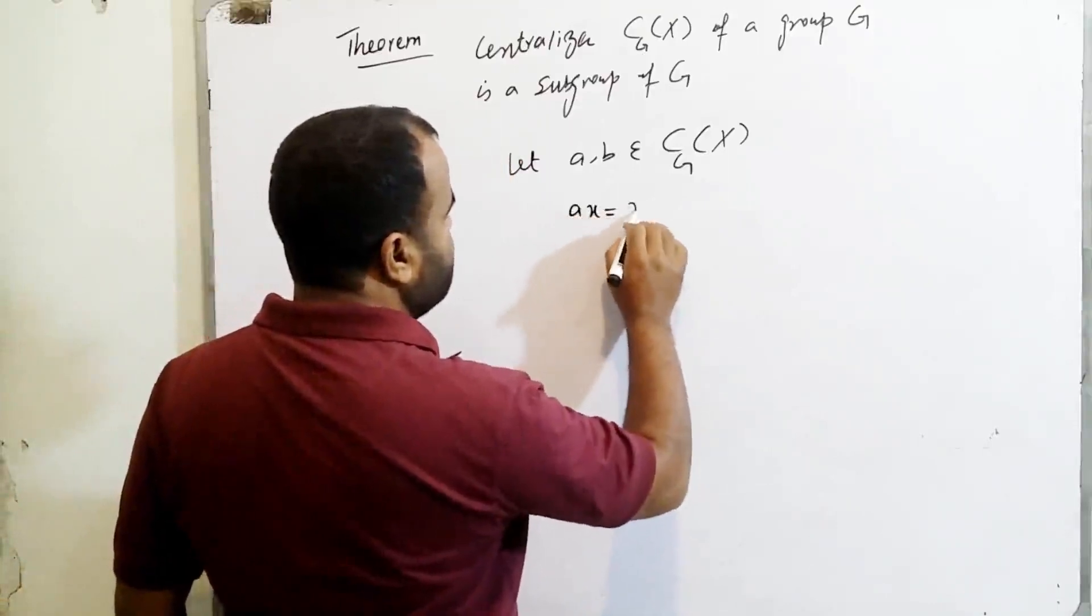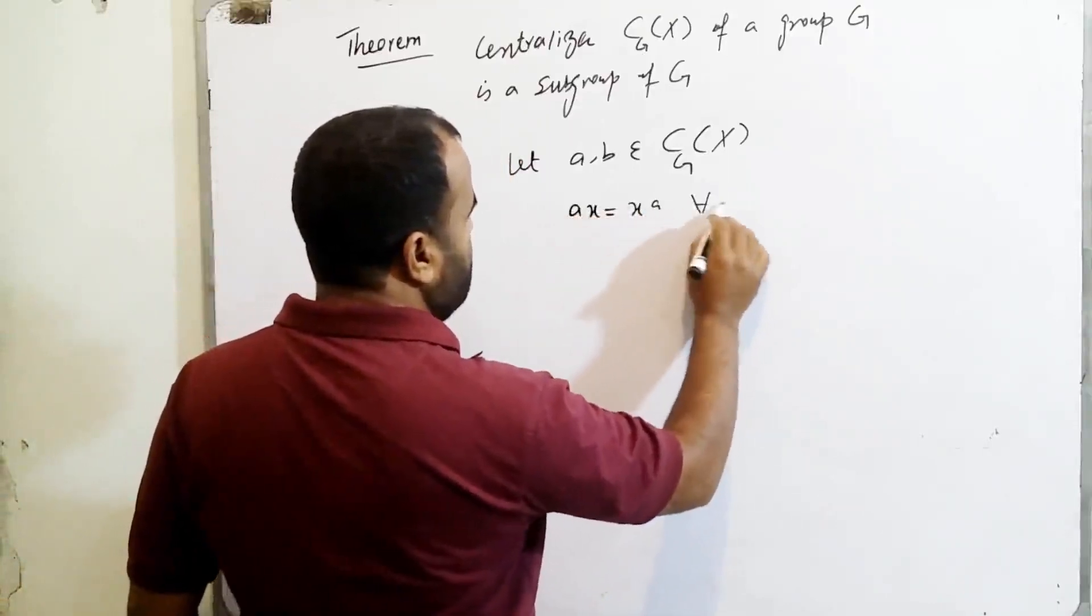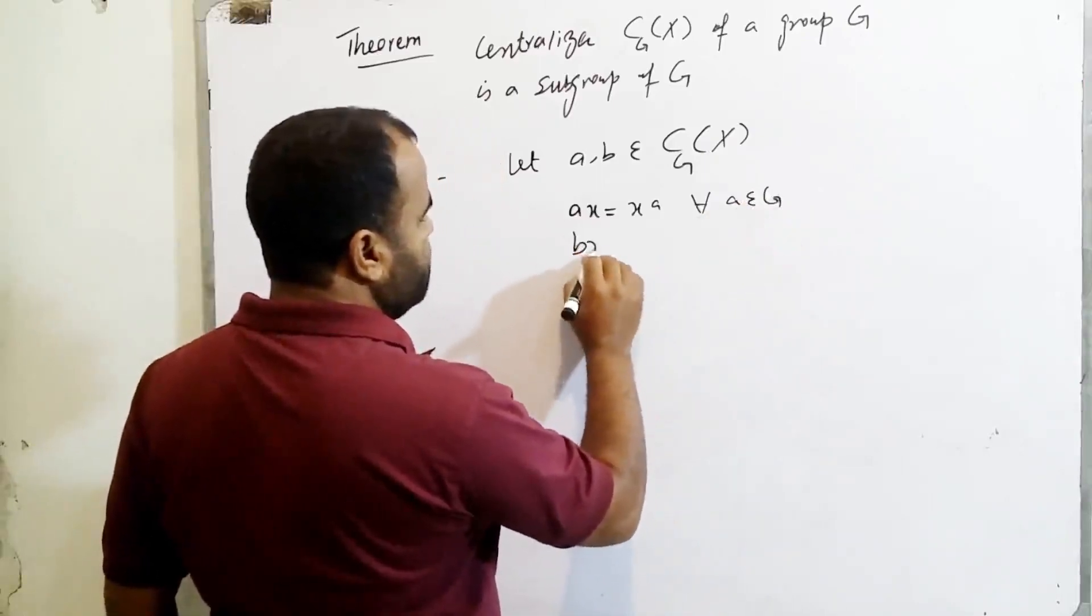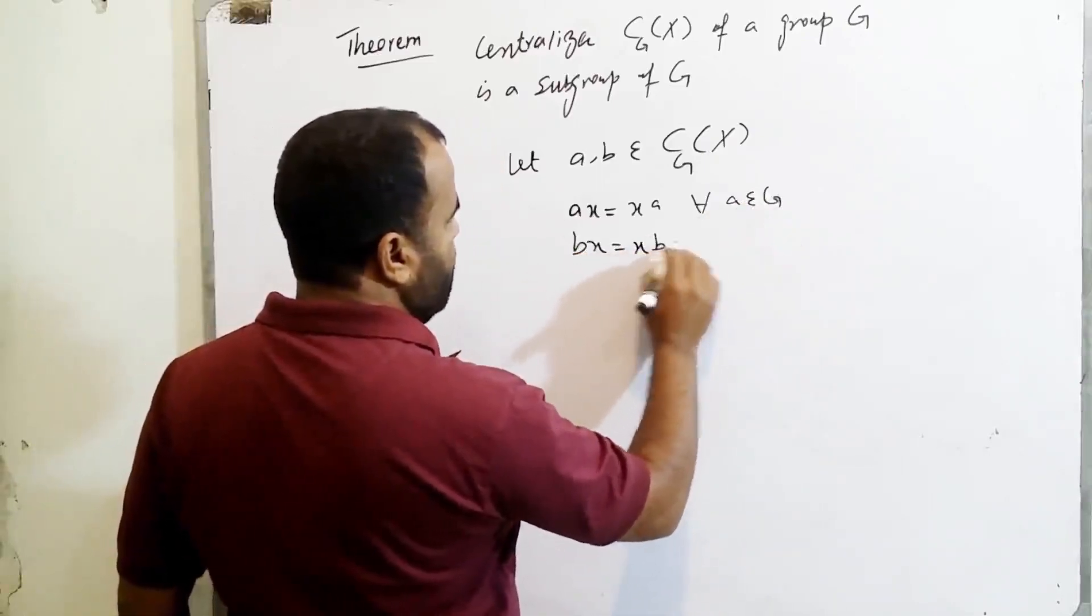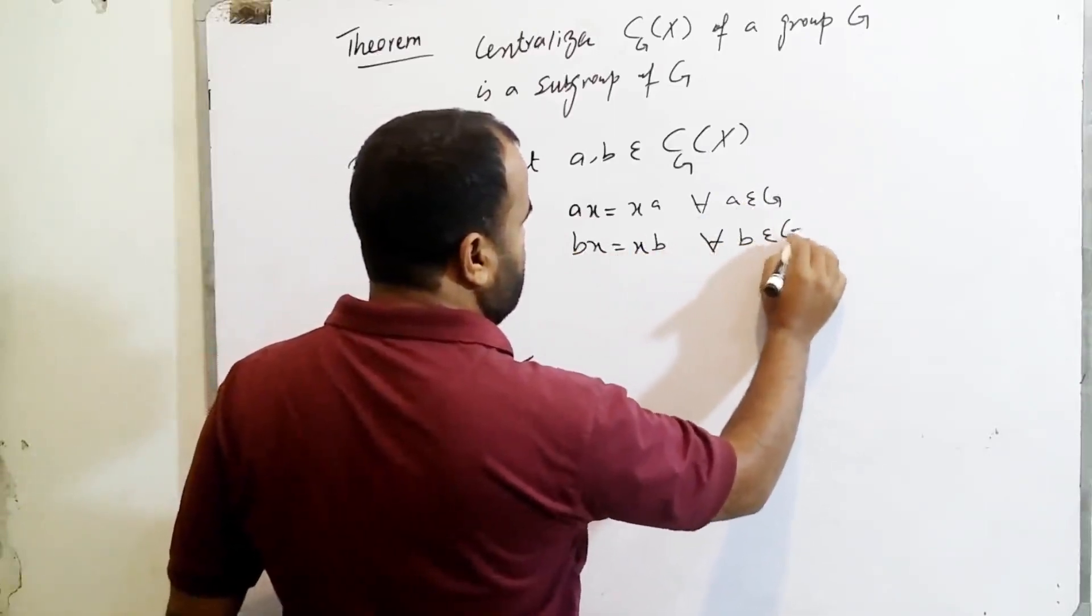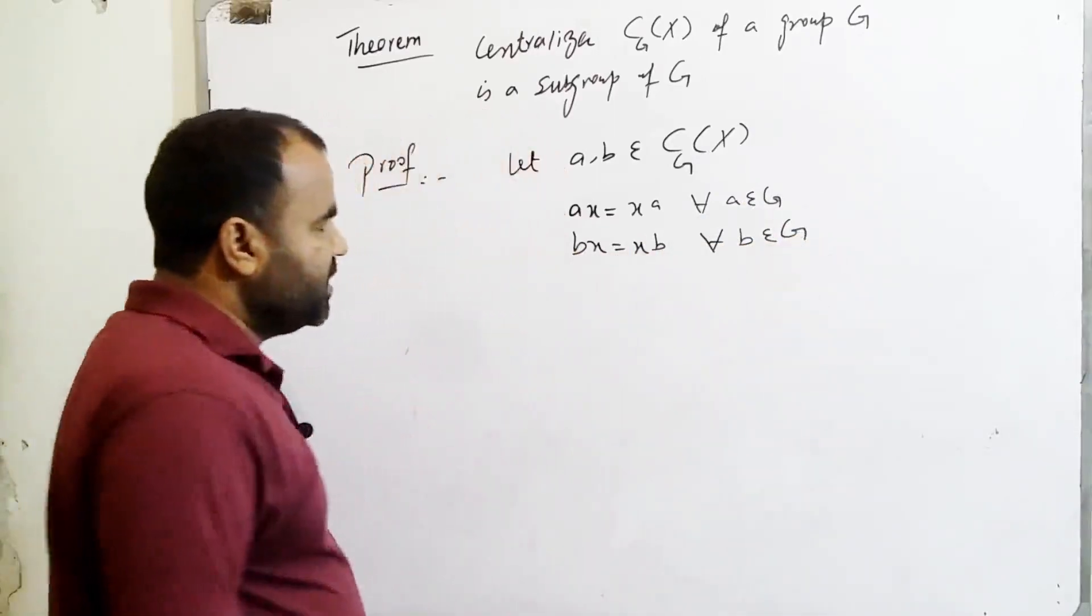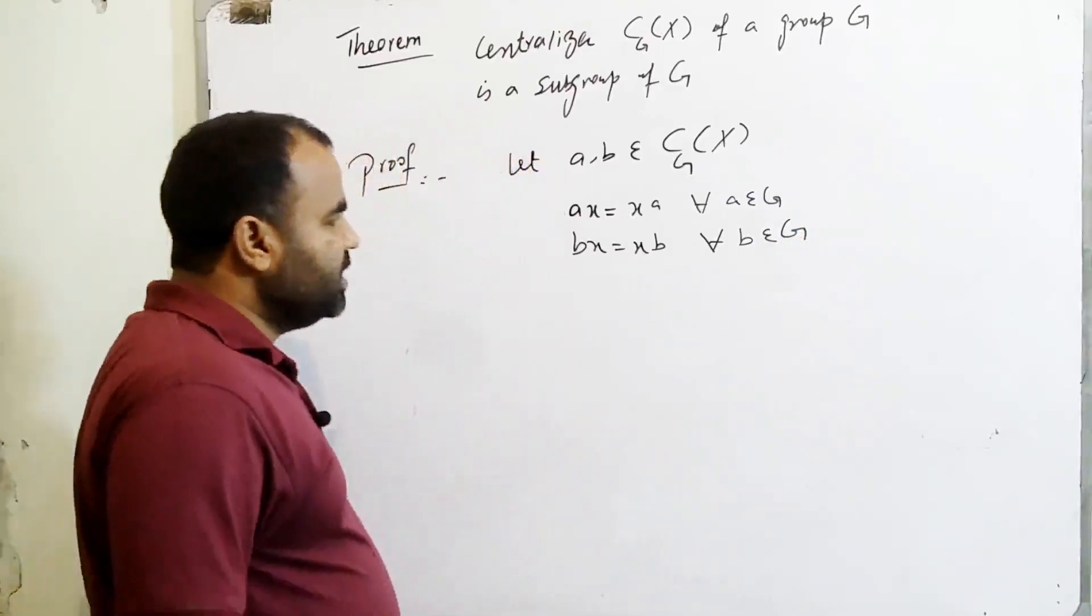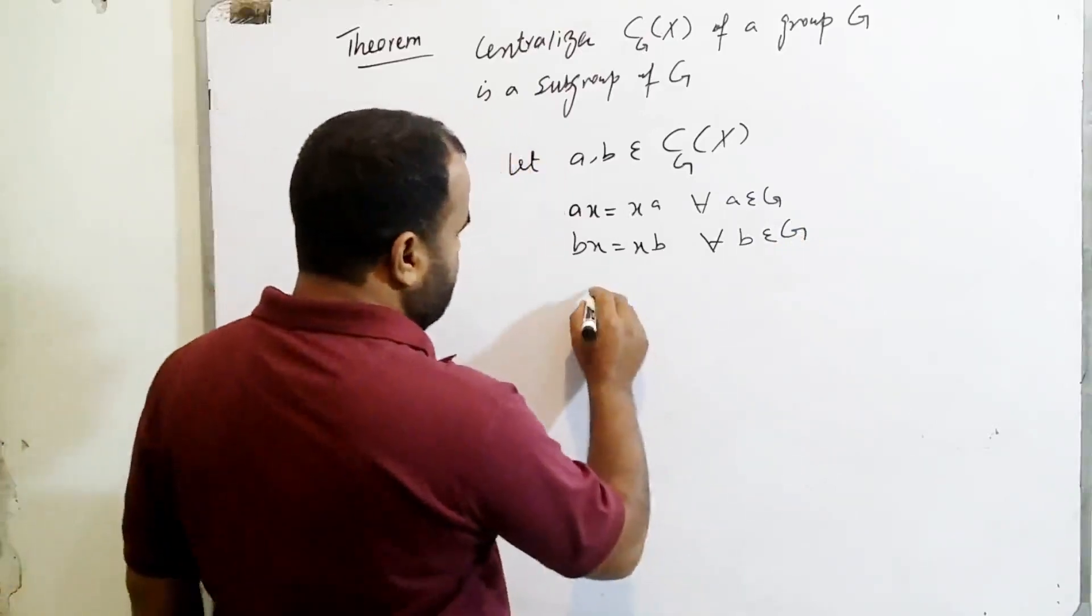Also, BX is equal to XB for all B belonging to G. Since G is a group and B is an element of G, this implies B inverse is also an element which belongs to G.